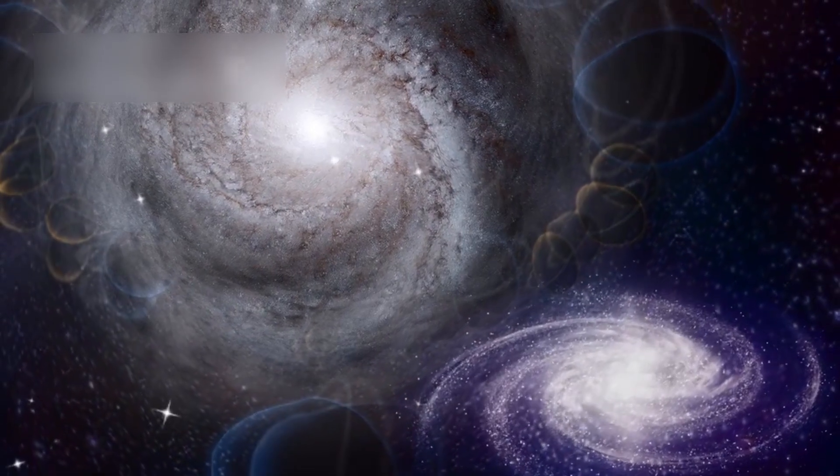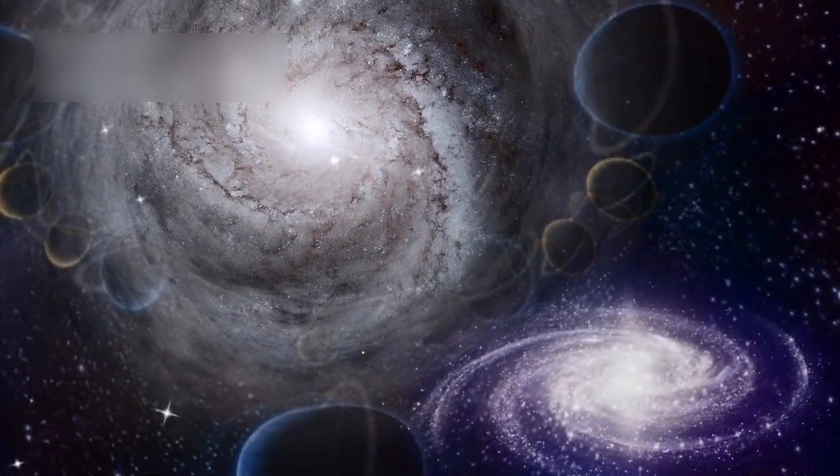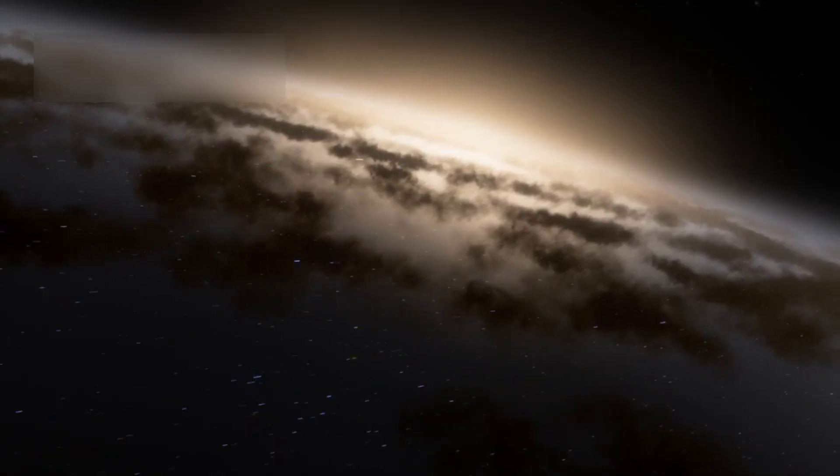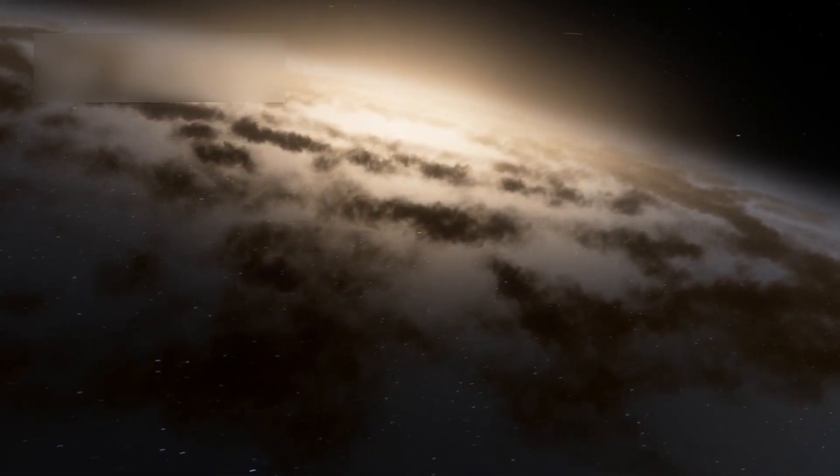Beyond it lies the local group, a small cluster of 54 galaxies, including Andromeda. Andromeda, 2.5 million light years away, races toward us at 68 miles per second.